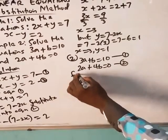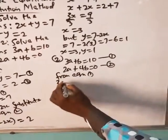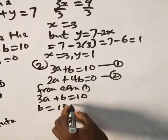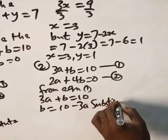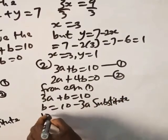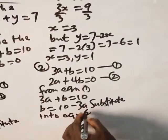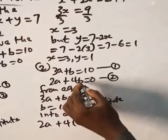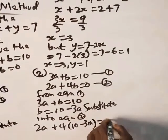So from equation 1, 3a plus b is 10. So b is 10. Bring 3a here. Minus 3a. You now substitute into equation 2. 2 says 2a plus 4b. 4b. What is b? 10 minus 3a is equal to 0.